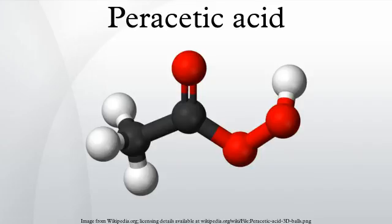Parasitic acid is an organic compound with the formula CH3CO3H. This organic peroxide is a colorless liquid with a characteristic acrid odor reminiscent of acetic acid. It can be highly corrosive. Parasitic acid is a weaker acid than the parent acetic acid, with a pKa of 8.2.